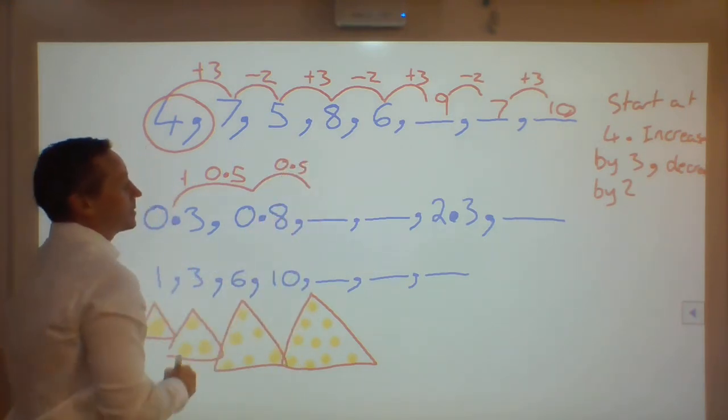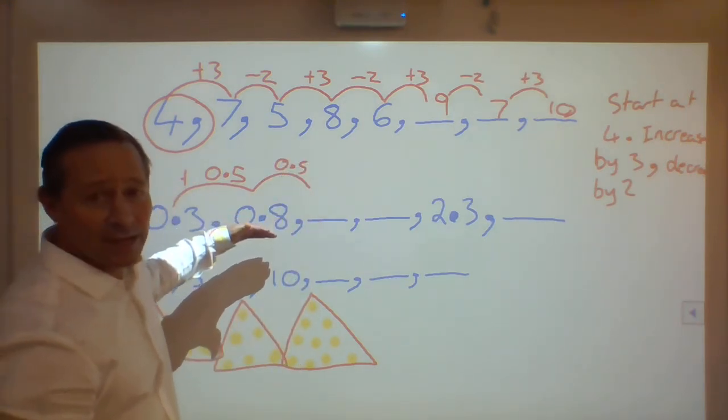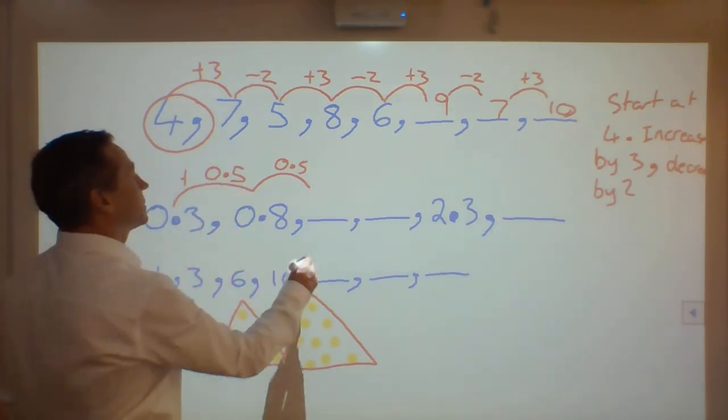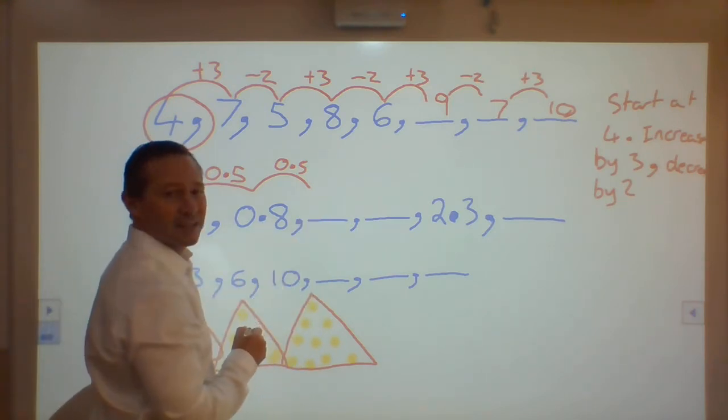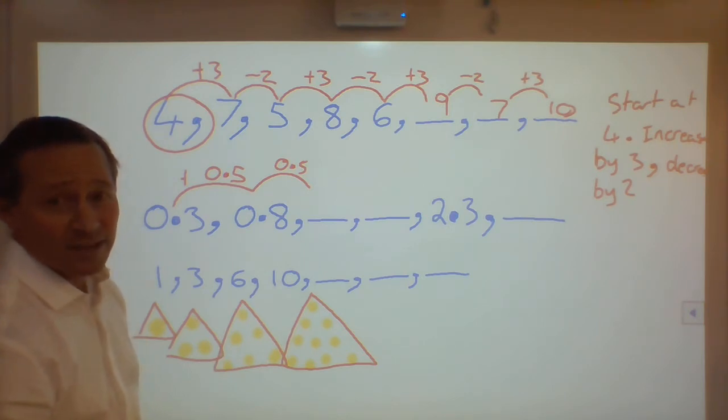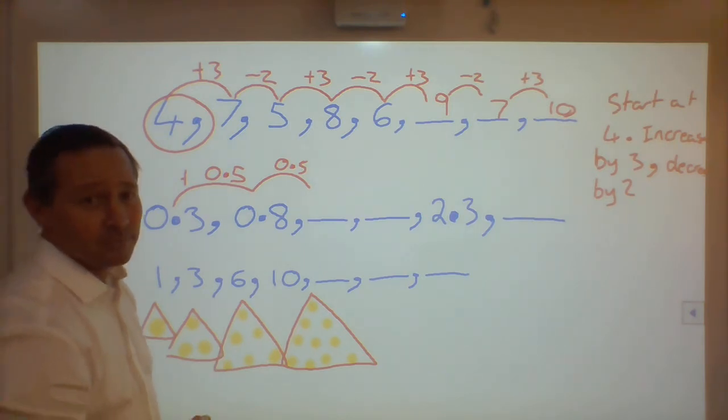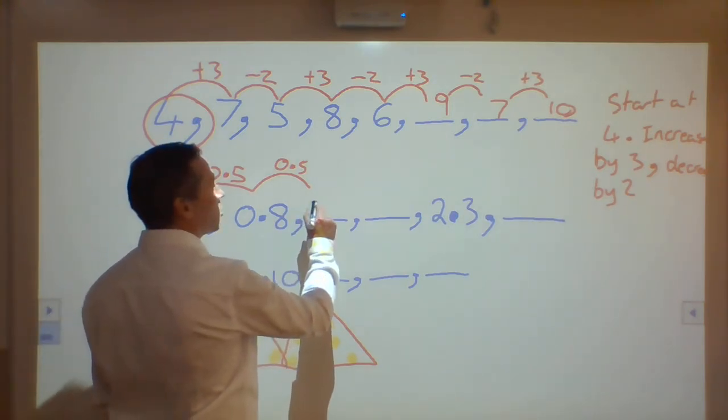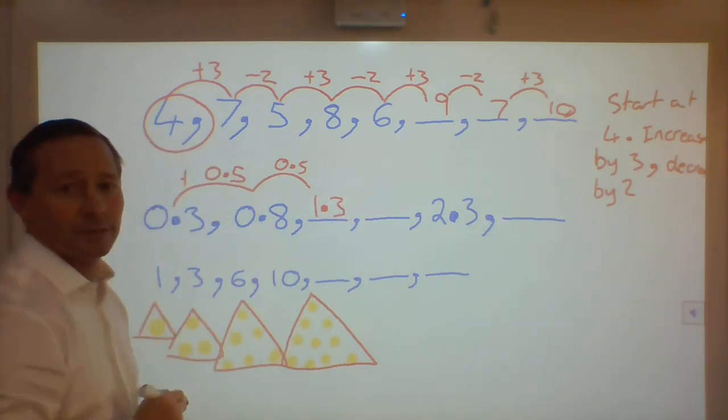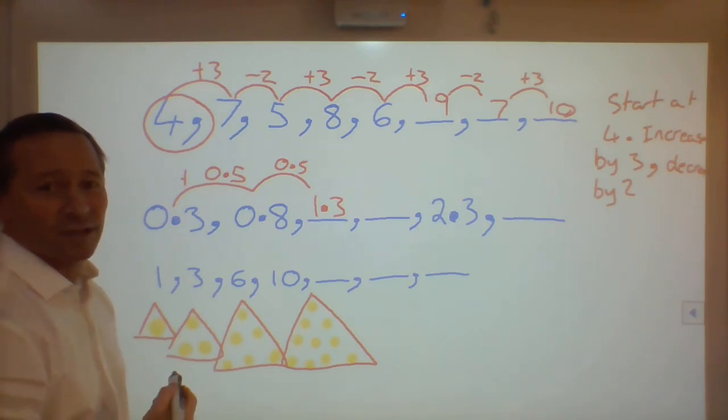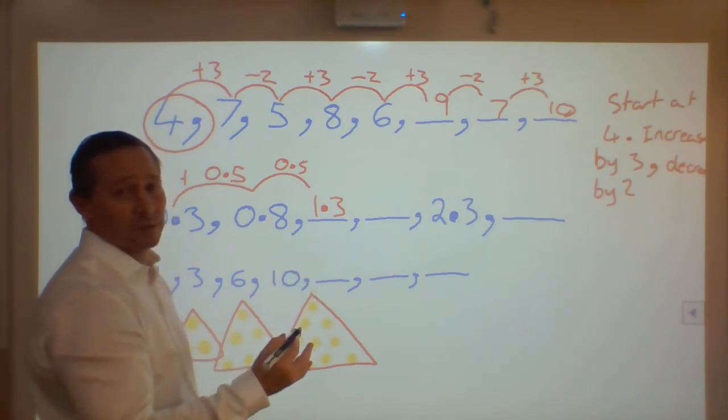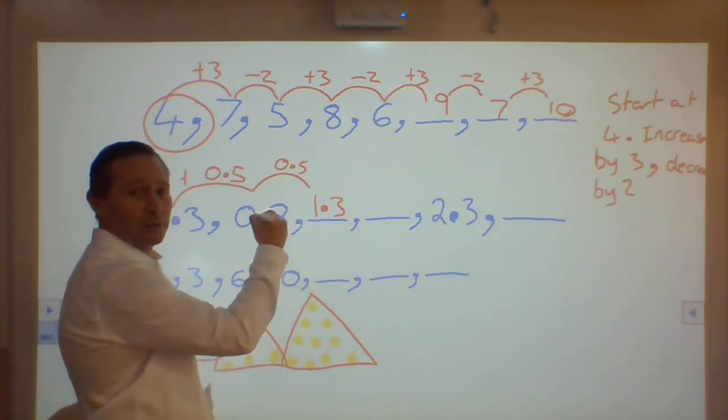0.8 plus 0.5 would be, what do you think? Is it going to be 0.13? Or, is it going to be 1.3? What do you think? Why? If you had 0.13, you are incorrect. If you have 1.3, you are correct.